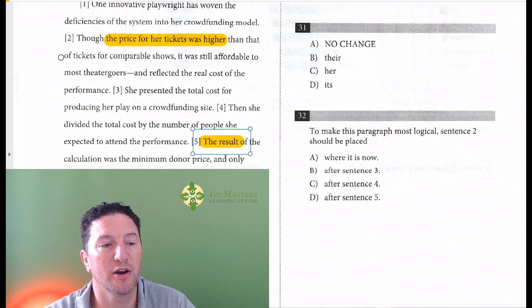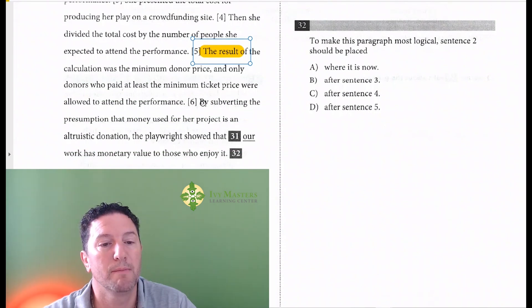Though the price for her tickets was higher than that of tickets for comparable shows, it was still affordable for theatergoers and reflected the real cost of the performance. By subverting the presumption that money used for the project is an altruistic donation, the playwright showed that her work has monetary value to those who enjoy it.